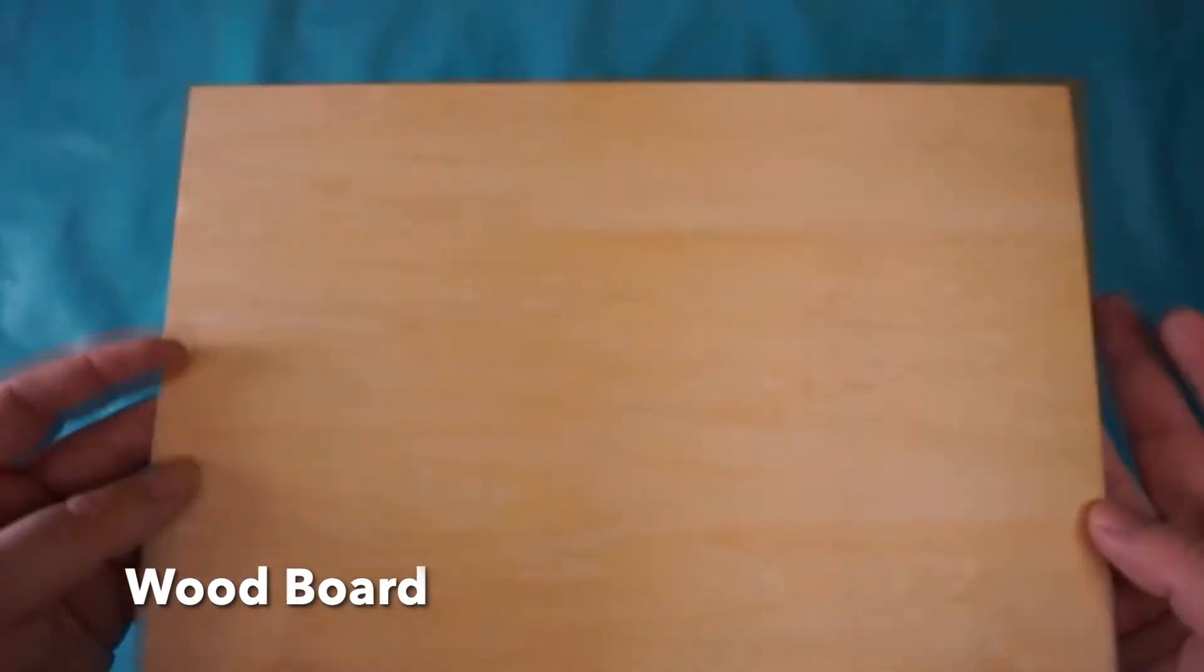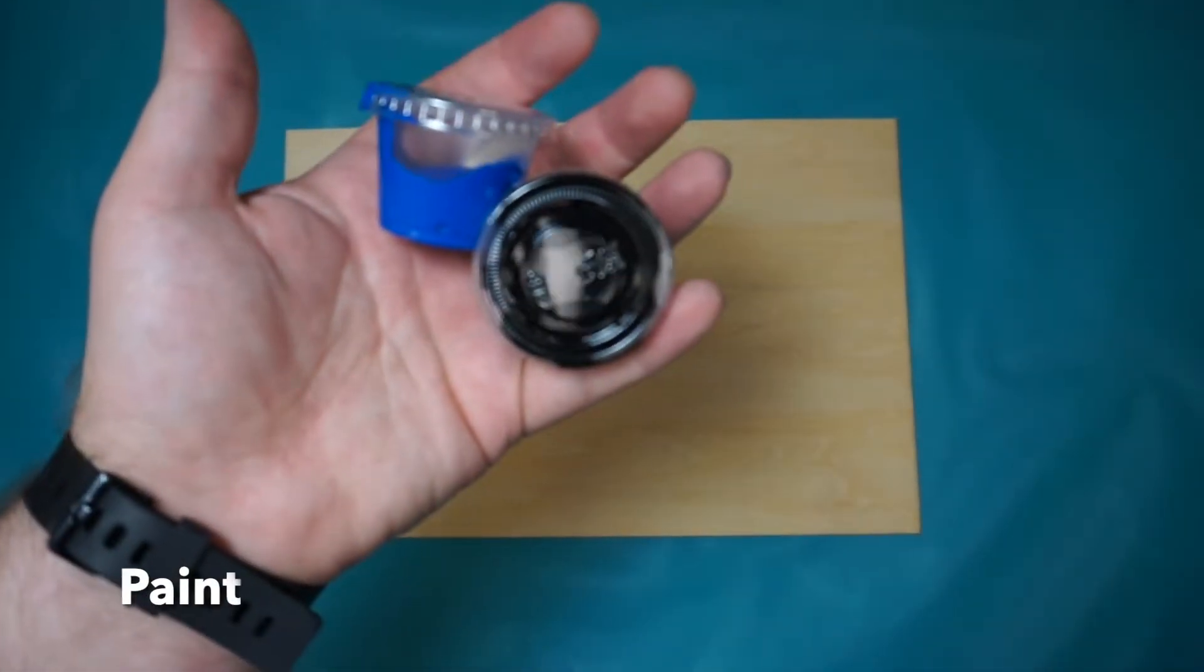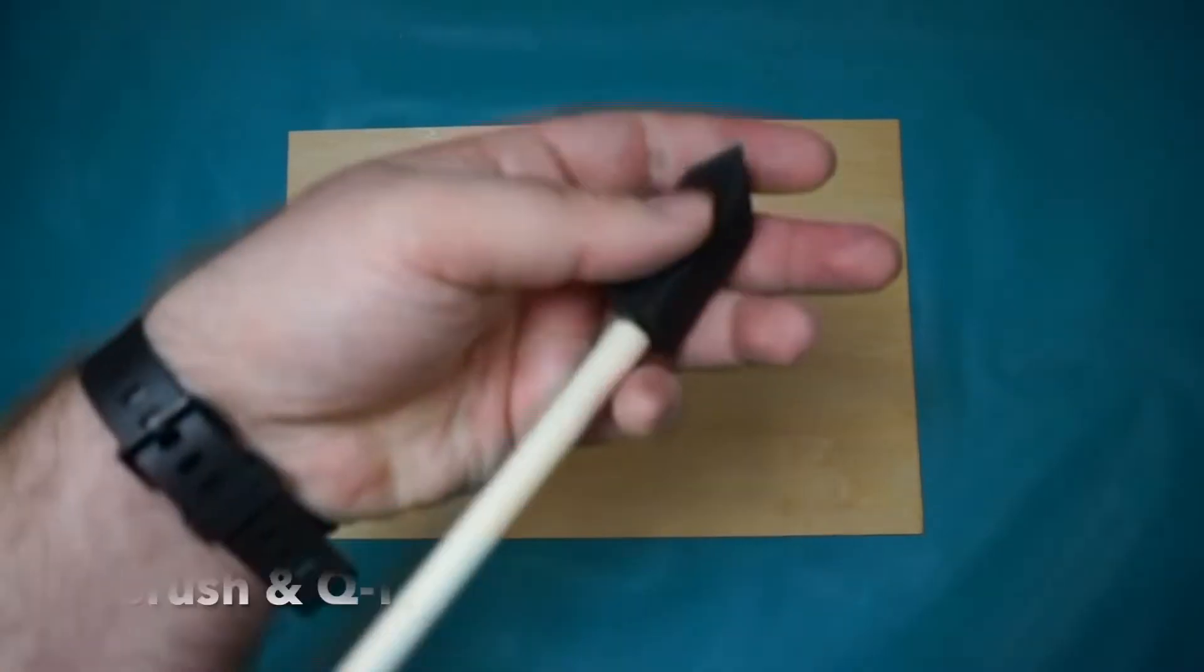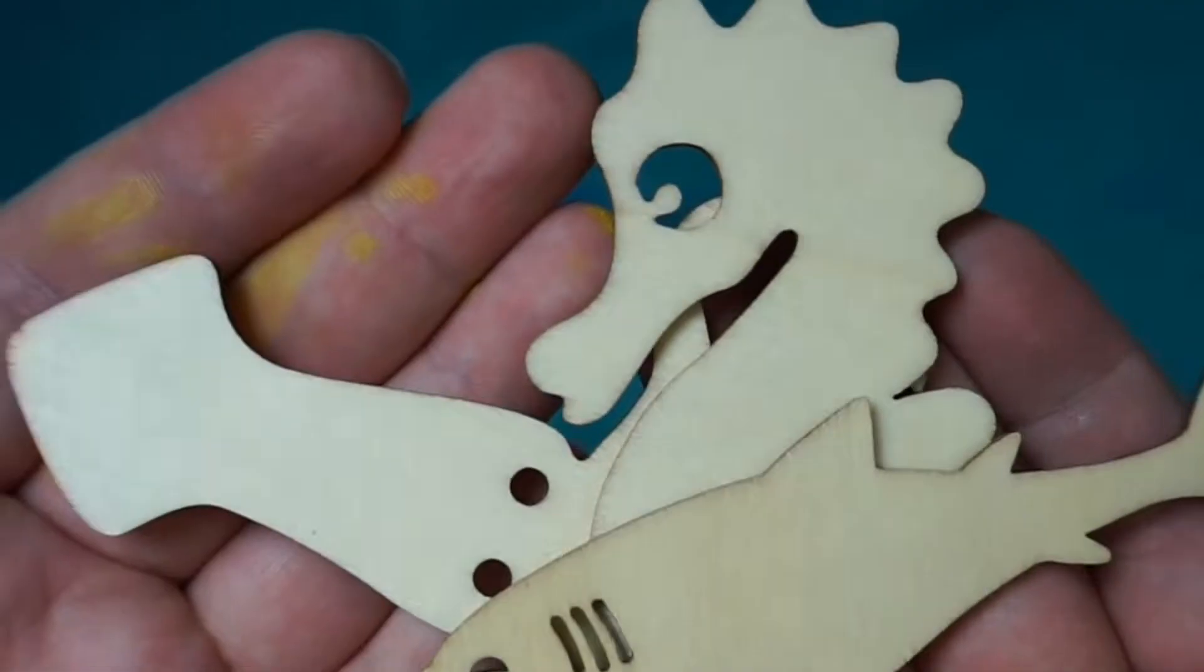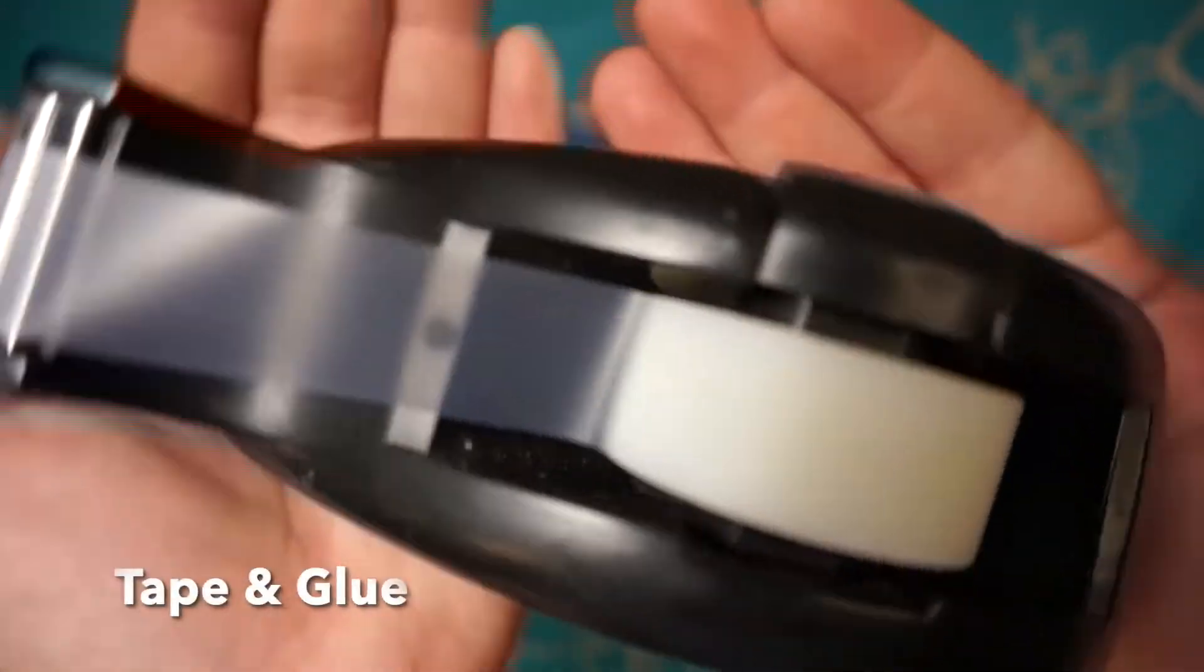You'll start off with your wood board, a bunch of different colors of paint, a paintbrush and Q-tip, your wood pieces, some netting, and tape.